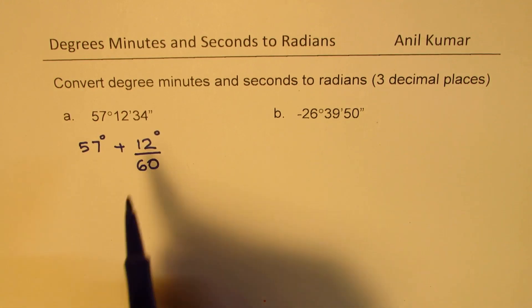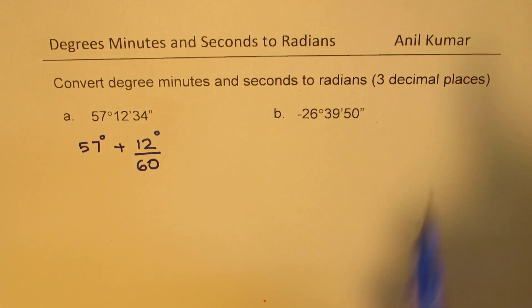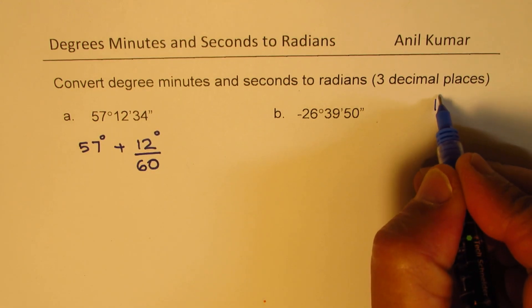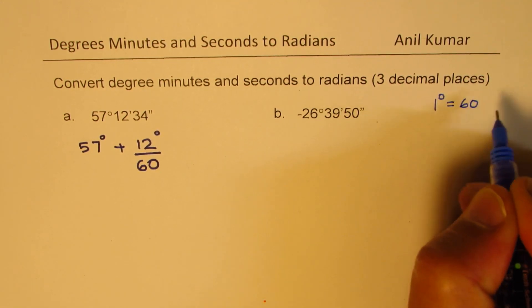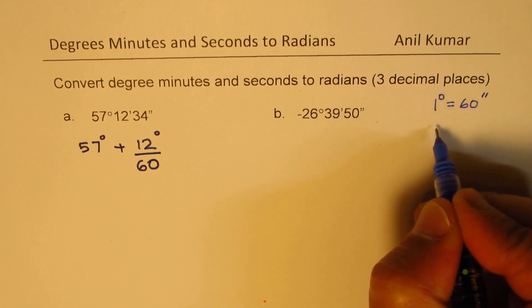So I have to divide this by 60 to get that also in degrees. The conversion factor as you know is this: one degree is equal to 60 minutes.